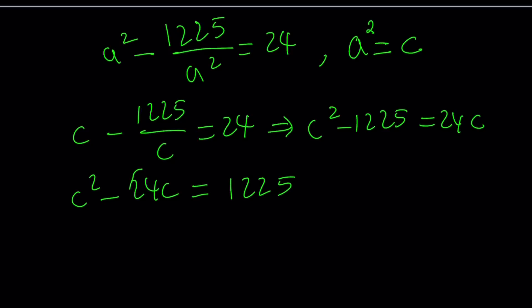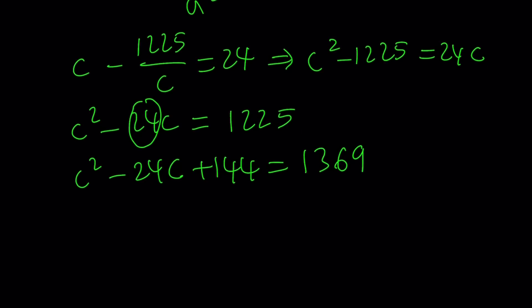Multiplication by c gives us c squared minus 1225 equals 24c. If you put everything on the same side, isolate 1225 on the right-hand side and bring the c over to the left-hand side, and then complete the square. For completing the square method, we add half of the middle coefficient squared. Half of 24 is 12, we square that number, and that is 144.